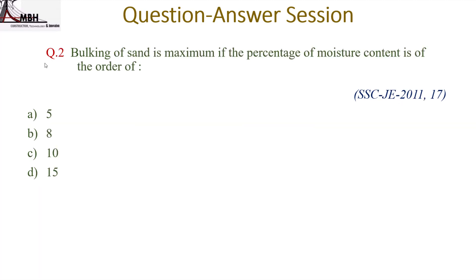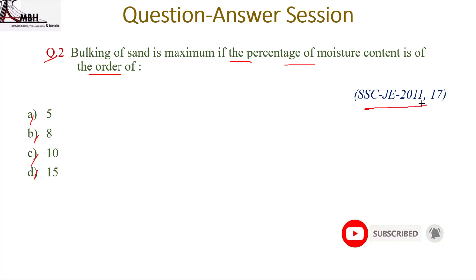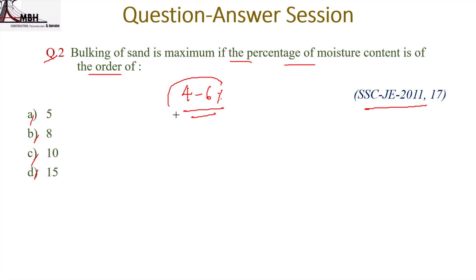Next question: bulking of sand is maximum if the percentage of moisture content is of the order of — option 5%, 10%, 5-8%, or 10-15%? This question has been asked twice, in 2011 and 2017. Bulking of sand increases with moisture content up to a certain limit. The maximum bulking occurs at 4 to 6 percent moisture content, which is approximately equal to 5 percent. So the correct answer is 5 percent.